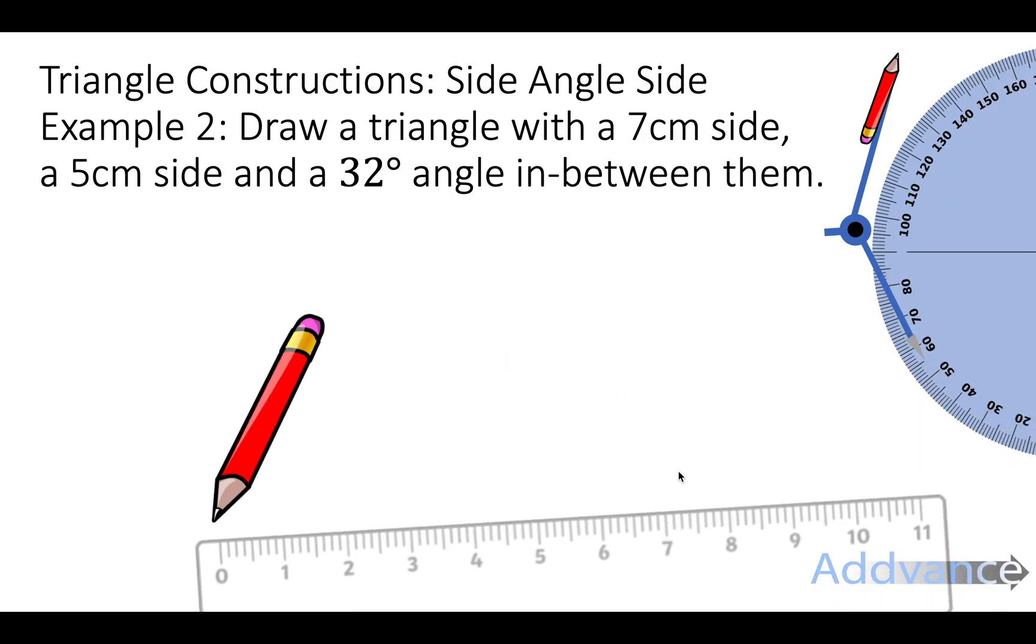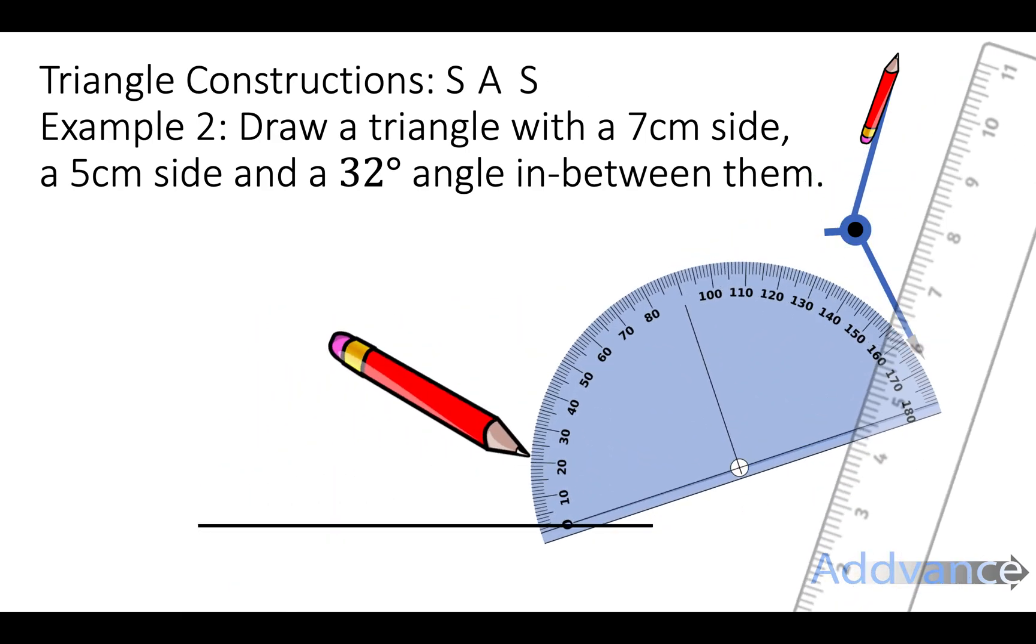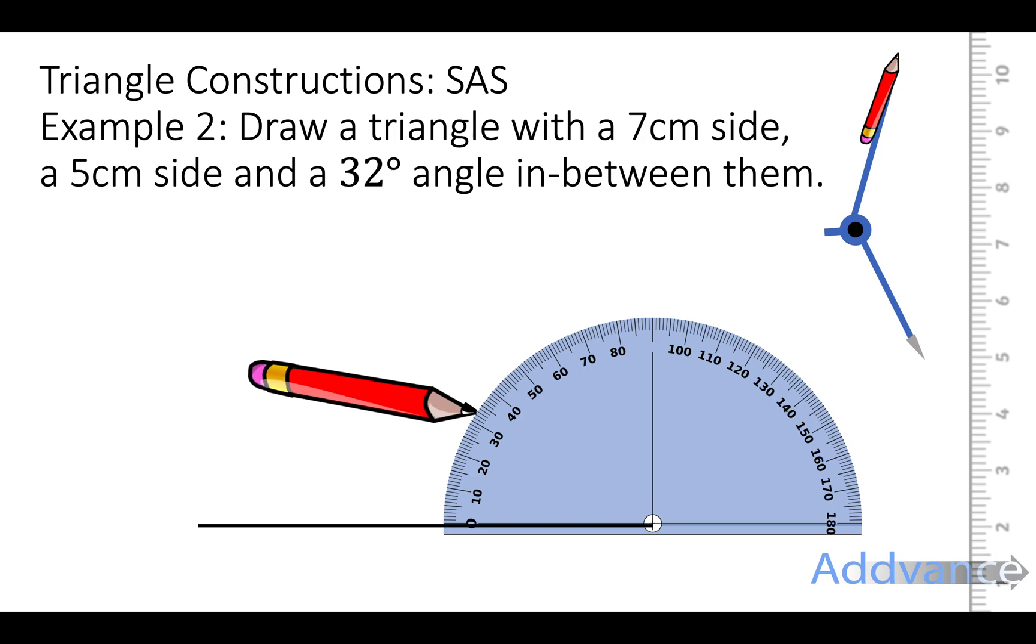So we draw a 7cm side like this. Then we take our protractor and we're going to do a 32 degree angle. So we do a dash at 32 degrees, counting from 0, 0, 10, 20, 30, and then 1, 2 degrees, 32. And we do a little dash with our pencil at that 32 mark. Remember when you use the protractor to put the bullseye of the protractor directly over the top of the end of the line.